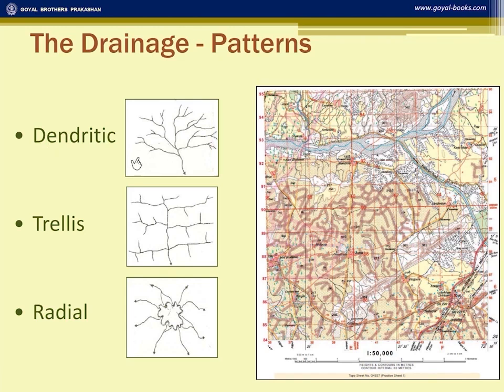In the radial pattern, the tributaries come out from a hill in a circular manner. Hence, this is called a radial pattern. You can see the example in grid square 3985.